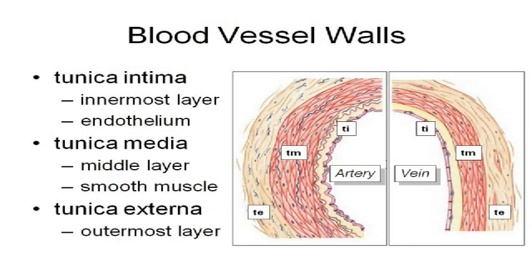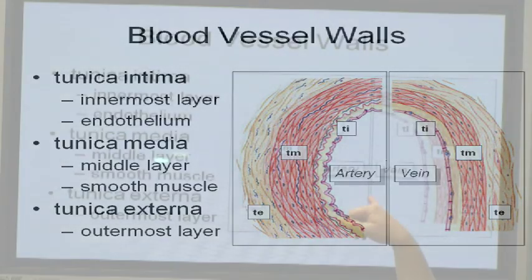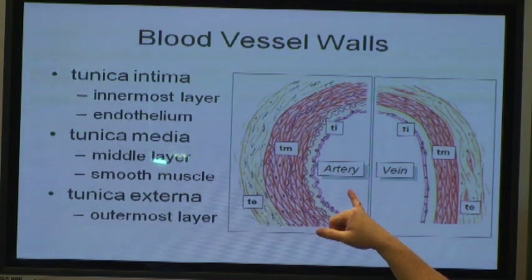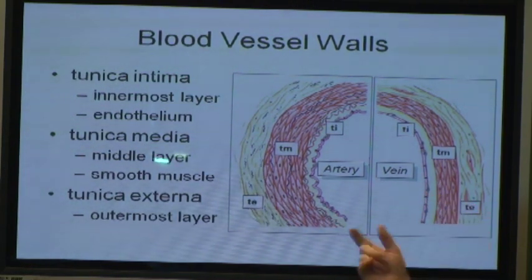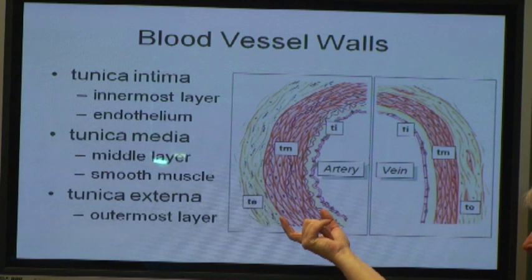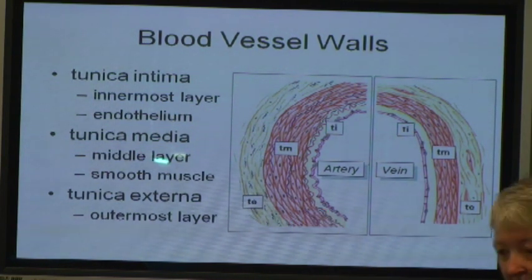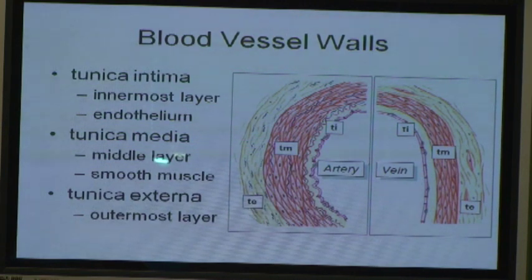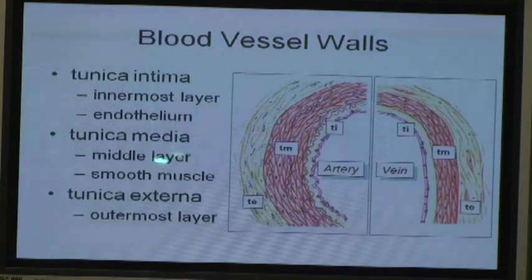One of the obvious differences between arteries and veins is that the tunica media of an artery is much thicker than the tunica media of a vein. The blood pressure inside an artery is much higher, so you need more muscle and more strength so that the artery doesn't rupture. Arteries have to have a thicker tunica media to withstand that blood pressure.